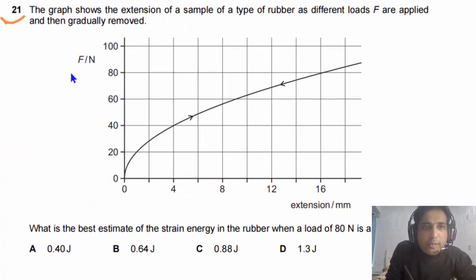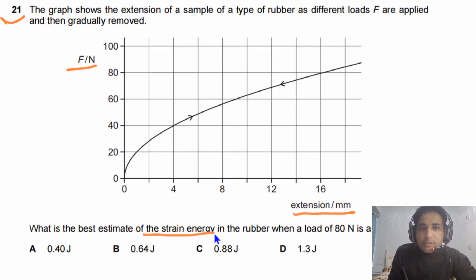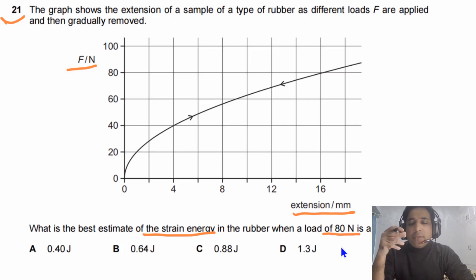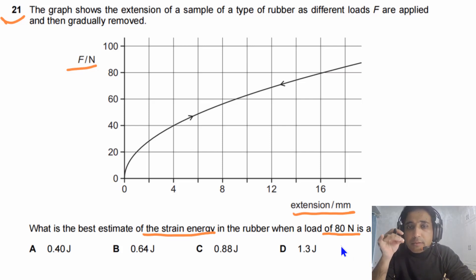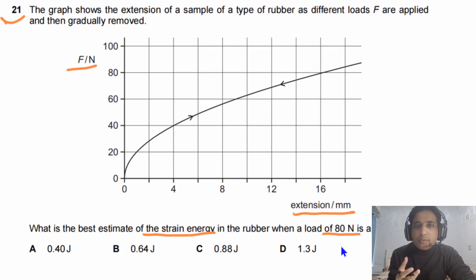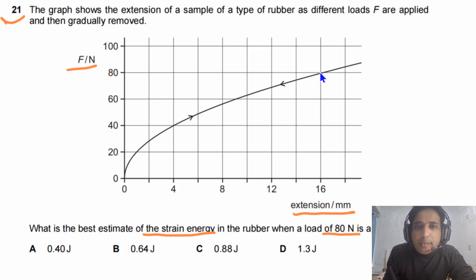For question number 21, a force against extension graph is given and we need to estimate the strain energy in the rubber when a load of 80 Newtons is applied. This is a very important question. You need to understand how to estimate area under a curve at A level — you will see one or two questions about this in your exam every year. We will use two different methods to answer this problem.